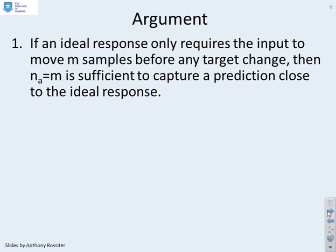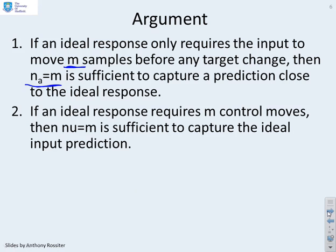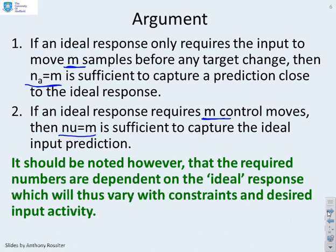So the argument: if an ideal response only requires the input to move m samples before any target change, then NA equals m should be sufficient to capture a prediction close to the ideal response, and you certainly don't need NA bigger than that. If the ideal response requires m control moves, then NA equals m should be sufficient to capture the ideal input prediction, or close to, if not exactly.